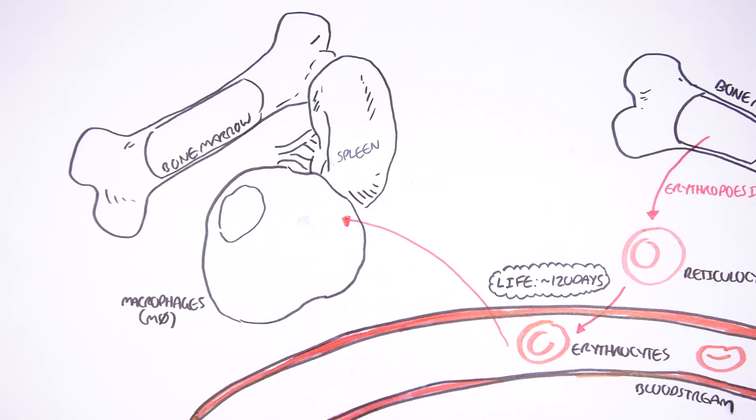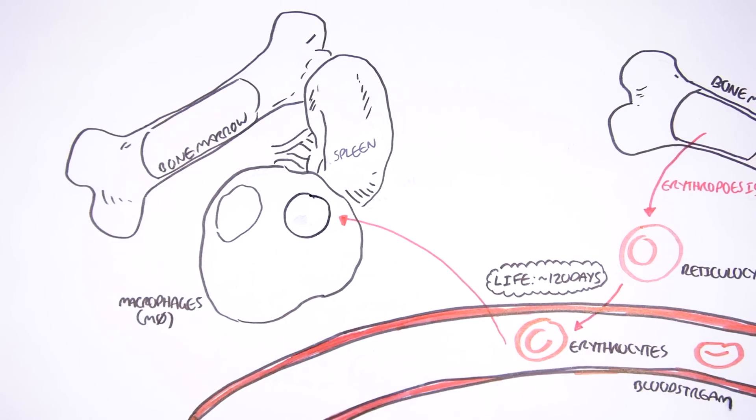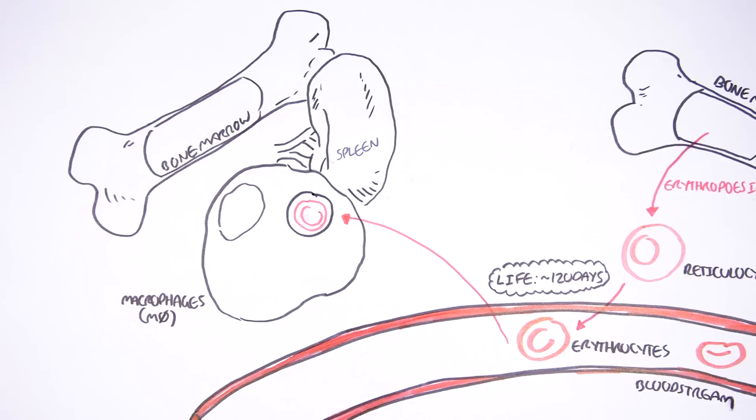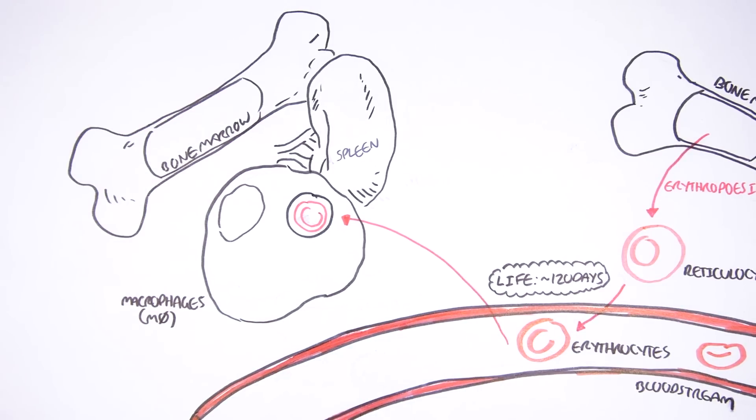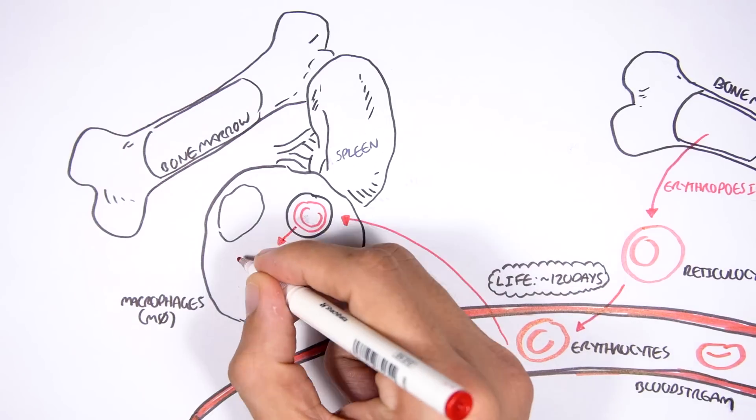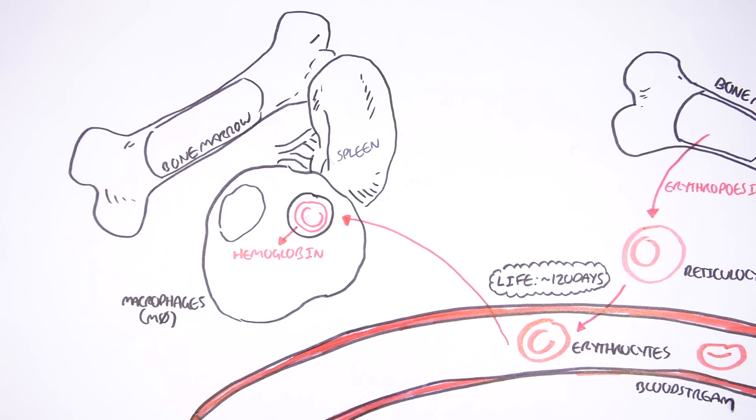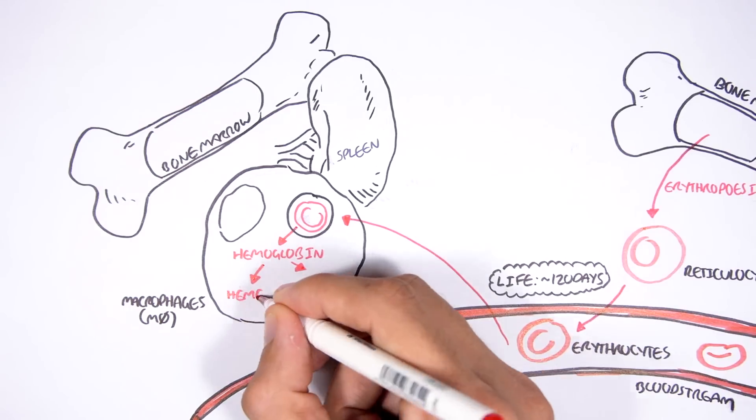When the macrophages in the spleen and bone marrow degrade the erythrocytes, the erythrocytes will release its hemoglobin molecules. The hemoglobin molecules will then be broken down into two main components, the heme and the globin.